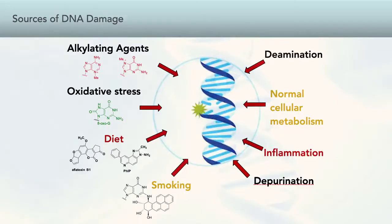Over our lifetimes, we as humans are exposed to thousands of endogenous chemicals formed as products of normal cell metabolism and inflammatory response, and also exogenous molecules found in our diet, environment, therapeutic treatments, and consumer products. Many of these molecules or their metabolic products are inherently electrophilic and can engage in chemical reactions with cellular DNA.